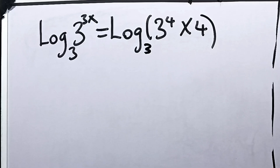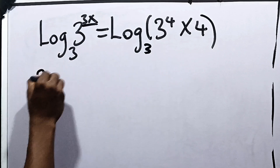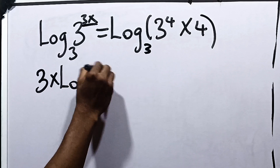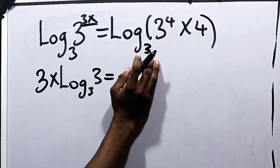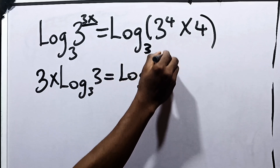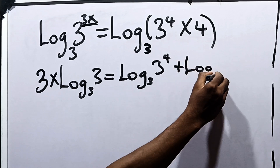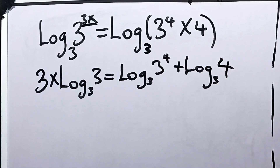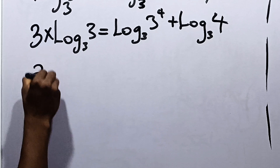Moving on, when you have a power inside a log, you bring it down and multiply. So we have 3x multiplied by log of 3 to base 3, equal to the right-hand side. When you have multiplication inside a log, you split and put plus. So we get: log base 3 of 3 raised to the power 4, plus log base 3 of 4. Note that 4 is 2 squared. Now, the logarithm of a number to its own base is 1, so log base 3 of 3 is 1, and 1 times 3x gives us 3x.